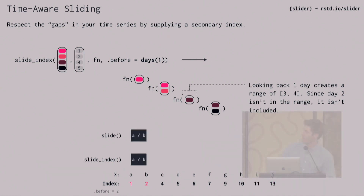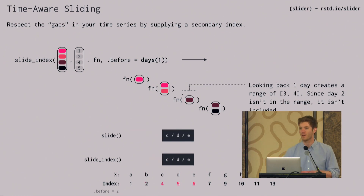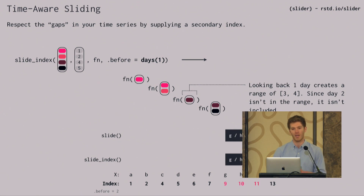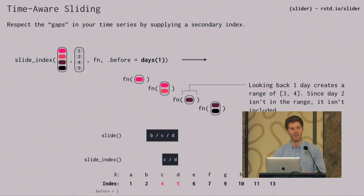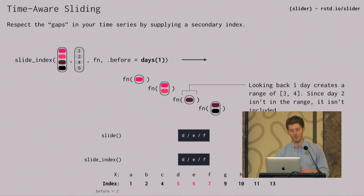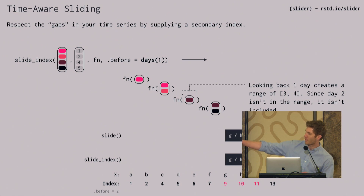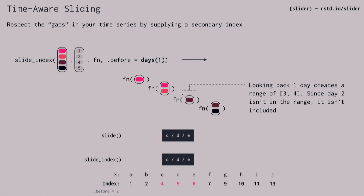If you have a vector and then a secondary index of one, two, four, and five — you can think of those like days of the month. If I want to take the current element and one day backwards, that's problematic because we have an irregular gap in this series. But slide_index is smart enough to know that when you're on the second day, you want a range of days one to two, and when you're on the fourth day, you want a range of days three to four. So it knows that in that third function call, you don't want day two. Slide doesn't know how to do this on its own, but slide_index does, solving this completely new problem that's really useful in time series analysis.